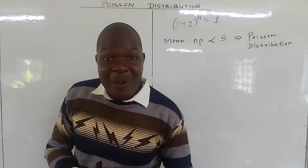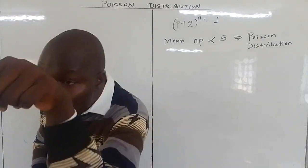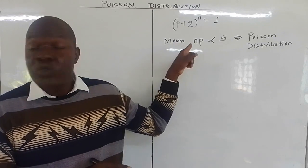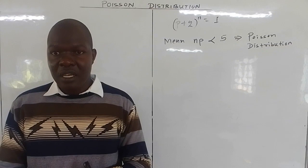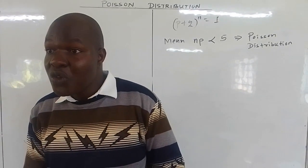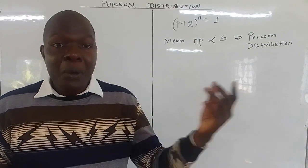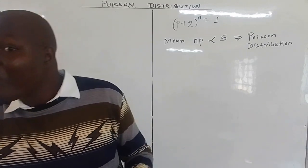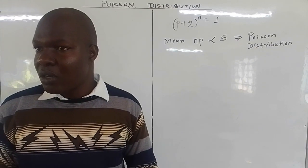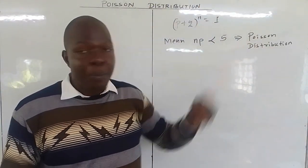When dealing with a binomial distribution, the value of P should always be chosen as the smaller one. That way you can check whether it can be approximated with the Poisson distribution. For example, if the defective rate is 5%, then P equals 0.05 and Q equals 0.95. Always choose P to be the smaller one so you can determine whether to approximate with Poisson.